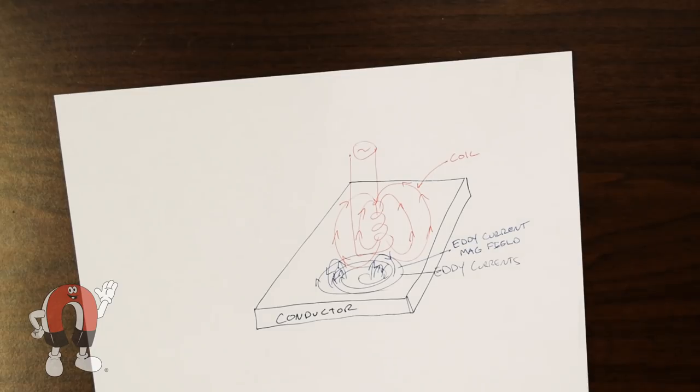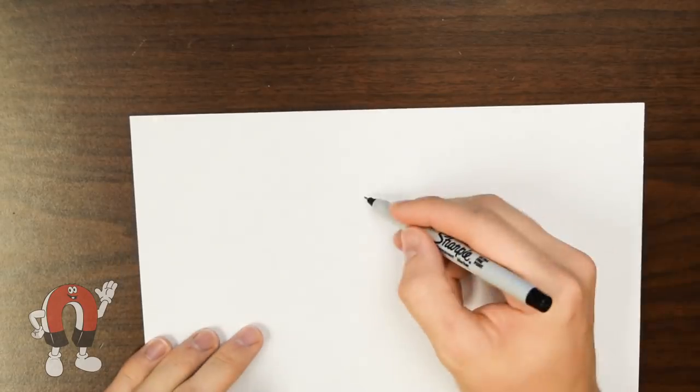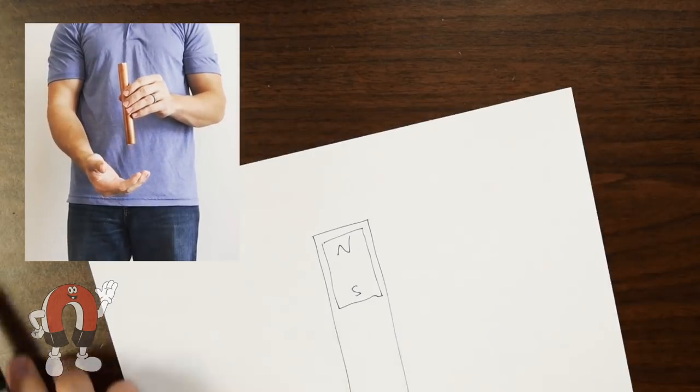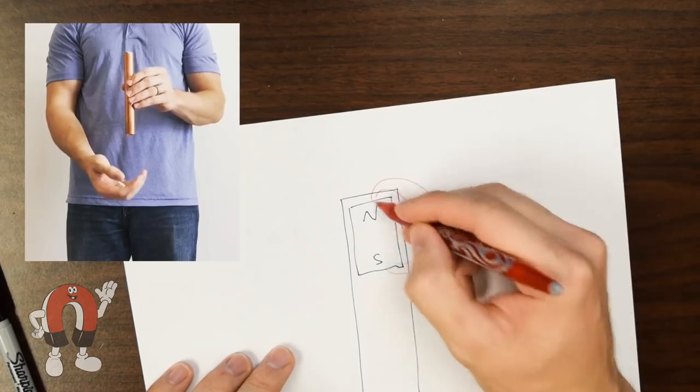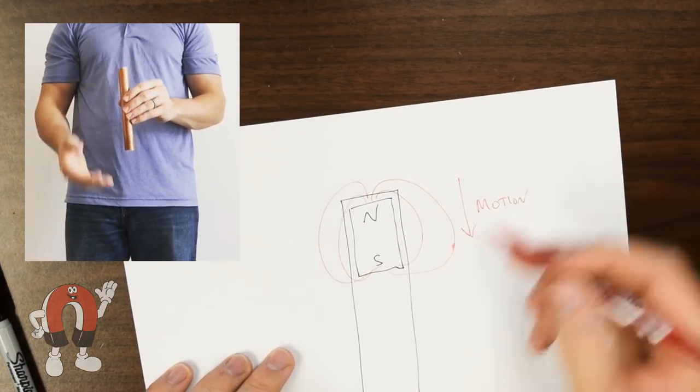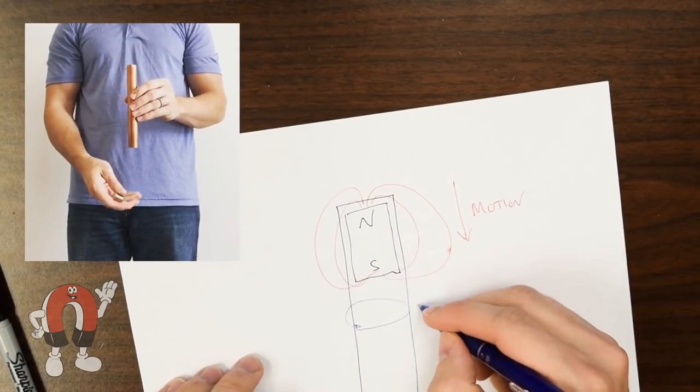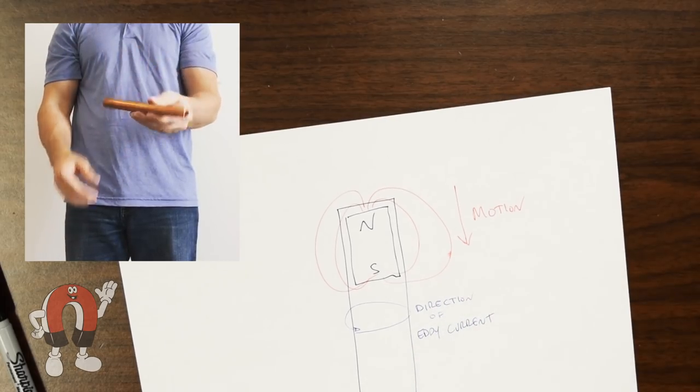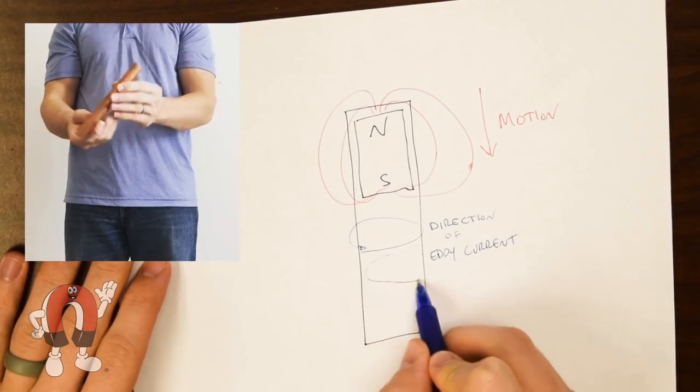The eddy currents in the conductive metal act like a weak magnet in the opposite direction. We've all seen the experiment of dropping a magnet down a copper tube. The opposing force slows the magnet down but doesn't stop it completely. The force is a function of the speed of the magnet.